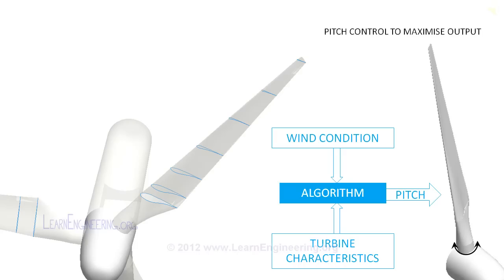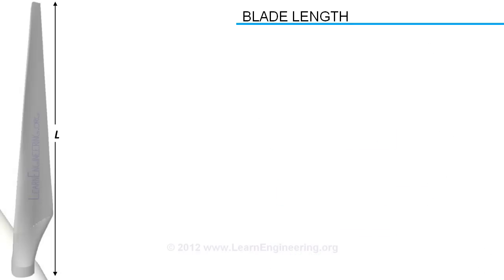Next big factor affecting performance of wind turbine is length of the blade. As we discussed in first video lecture, power extracted by the wind turbine varies according to this equation. So it is clear that a longer blade will favor the power extraction.